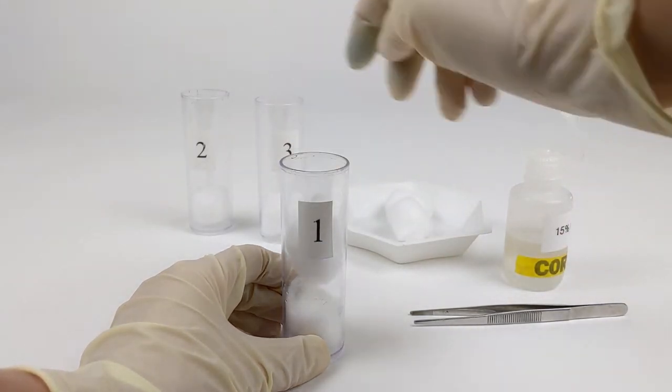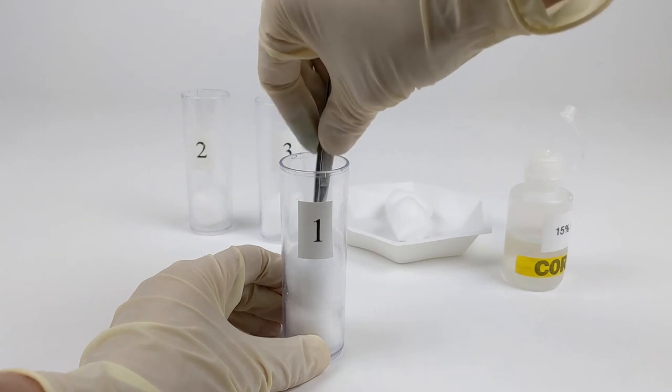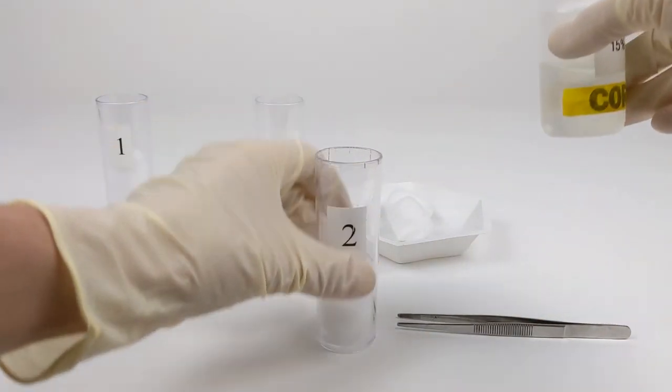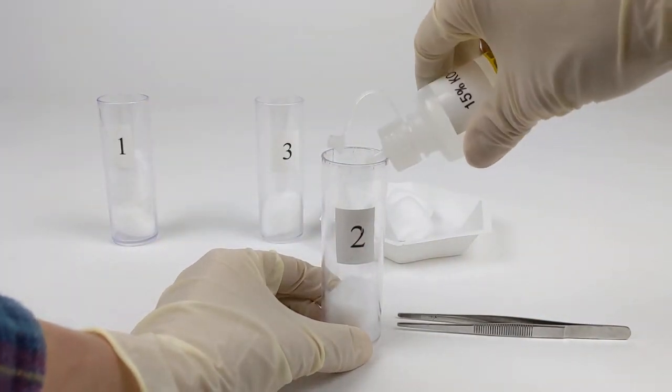After we've saturated the first cotton ball, we're adding a dry cotton ball on top to protect the contents of the vial from the corrosive potassium hydroxide.